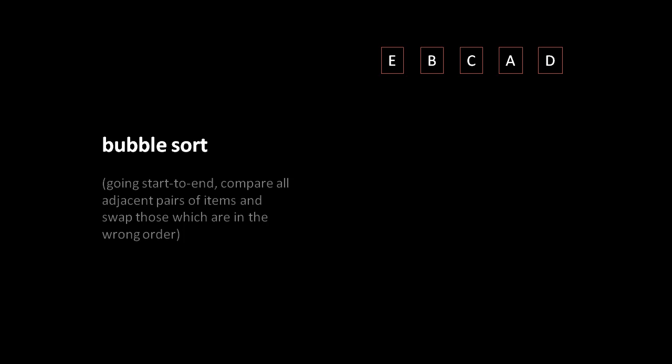The general strategy of the bubble sort algorithm is that we work from the start of the list to the end of the list, comparing each adjacent pair of items and swapping those which are in the wrong order. Here we have our unsorted list of E, B, C, A, D, which properly sorted would be A, B, C, D, E.